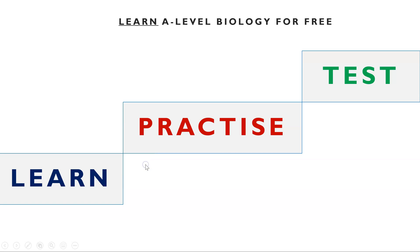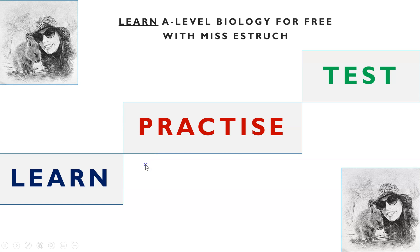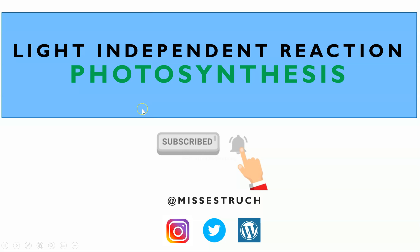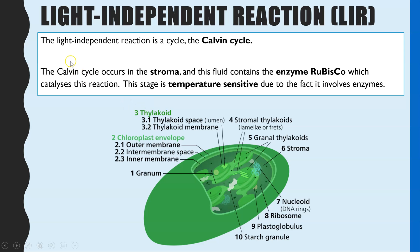Hi everyone and welcome to learn A-level biology for free with Miss Esterick. In this video I'm going through the second stage of photosynthesis, which is the light independent reaction. The light independent reaction is also known as the Calvin cycle — you may have learned it called the light independent reaction, or LIR for short, or the Calvin cycle.